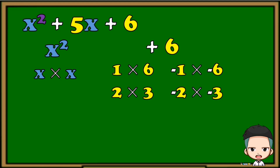As you notice, we did not get the negative factors of x squared, since for the first term we only need the positive factors. But for the last term, make sure to write all the factors including the negatives. After that, we need to look for the factors that if we add, the result is equivalent to the numerical coefficient of the second term. If we add 1 and 6, the result is 7, and that is not equivalent to our second term. If we add 2 and 3, the result is positive 5, and that is equivalent to the numerical coefficient of our second term. So we're going to use these factors.